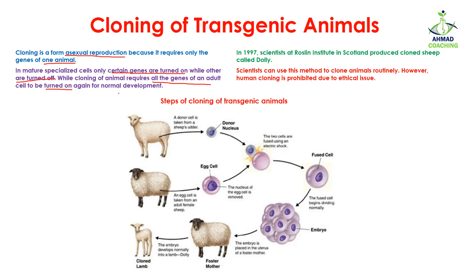If you see it this way, it seems impossible to clone a complete organism from mature cells. But this impossible thing was made possible in 1997, when scientists from the Roslin Institute in Scotland produced a cloned sheep known as Dolly. Nowadays, scientists are using this method to clone animals routinely.